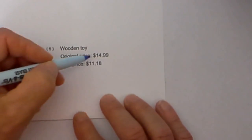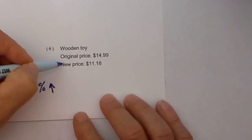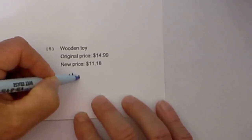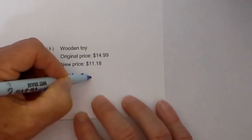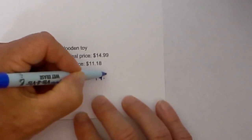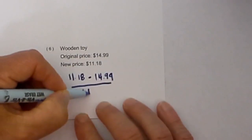We have a wooden toy. The original price is $14.99, now it's $11.18. So the new price is 11.18 minus the old, or original, whichever term you like best, over the old, which is 14.99.